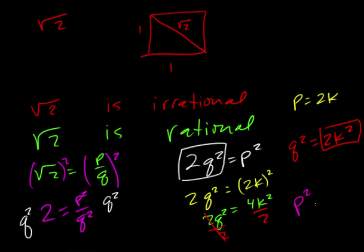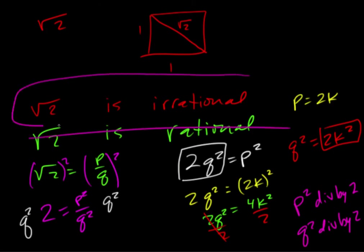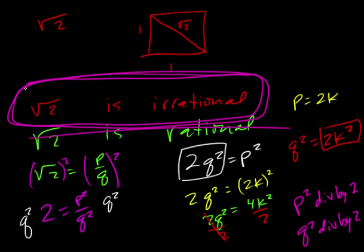...we know that p squared is divisible by 2 and we know that q squared is divisible by 2. And since that's a contradiction, we know that the square root of 2 is not rational. So this is false, which by contradiction proves the original statement that the square root of 2 is rational.